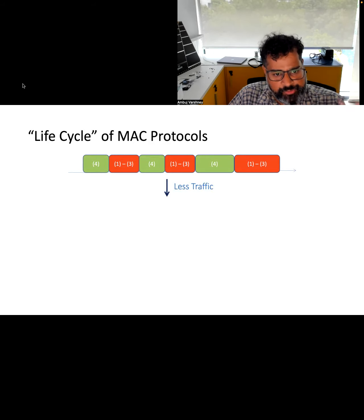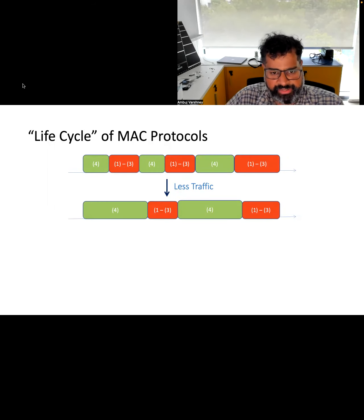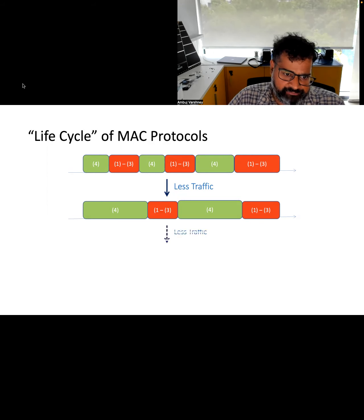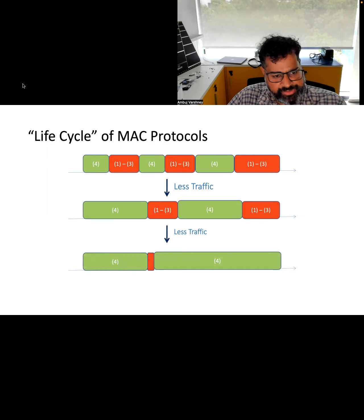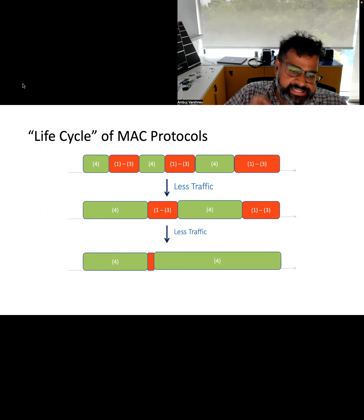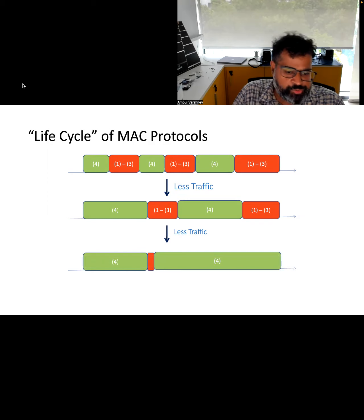As the amount of traffic reduces — meaning the application is sending less and less data — idle listening starts to dominate and the red communication period drops significantly in proportion. With even less traffic, idle listening essentially dominates the entire life cycle, while only a small period has the radio in an active state of idle, transmit, or receive. This last state is where IoT device MAC mechanisms typically operate.